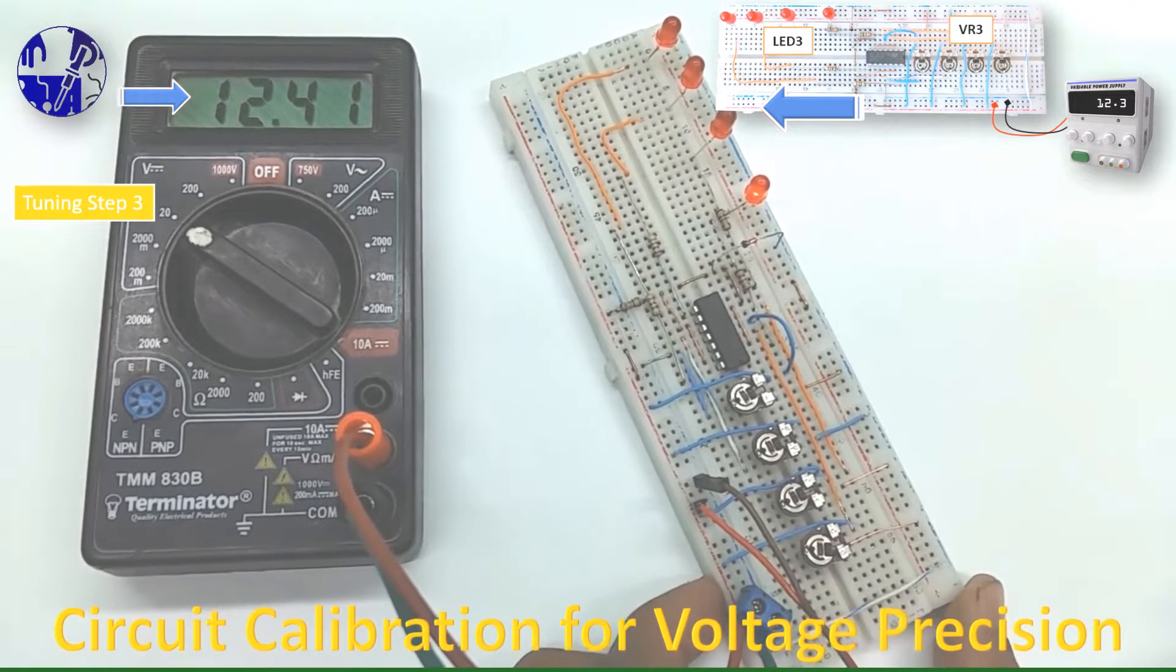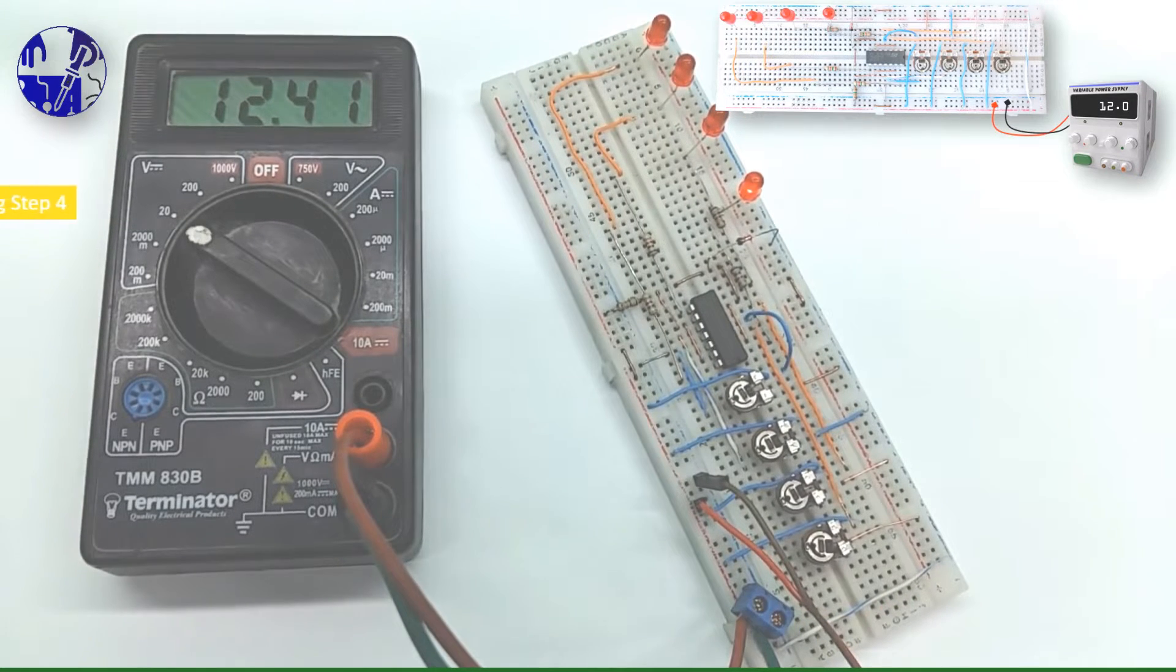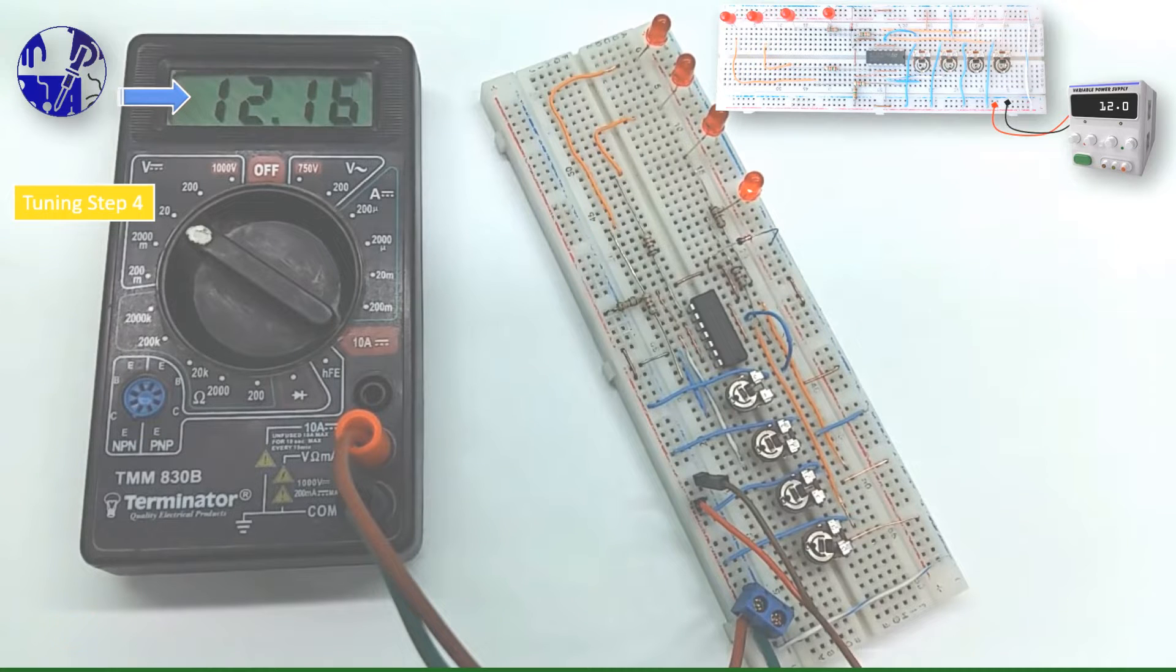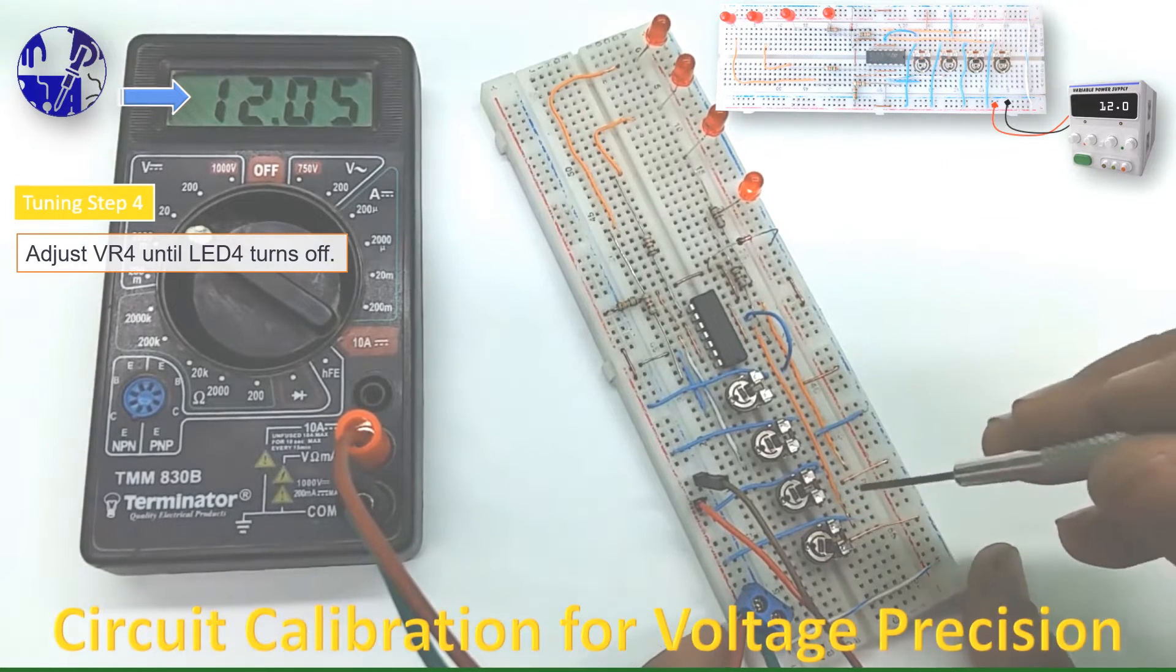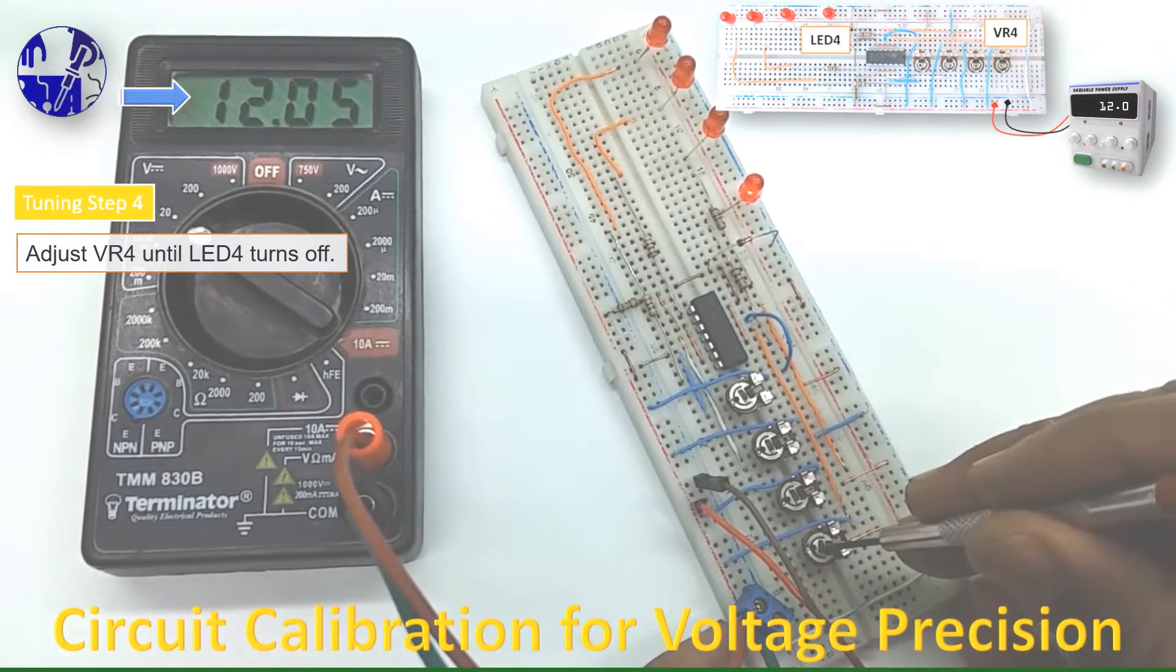Now for the last level of the battery, set 12 volt in the power supply and adjust VR4 until LED 4 turns off.